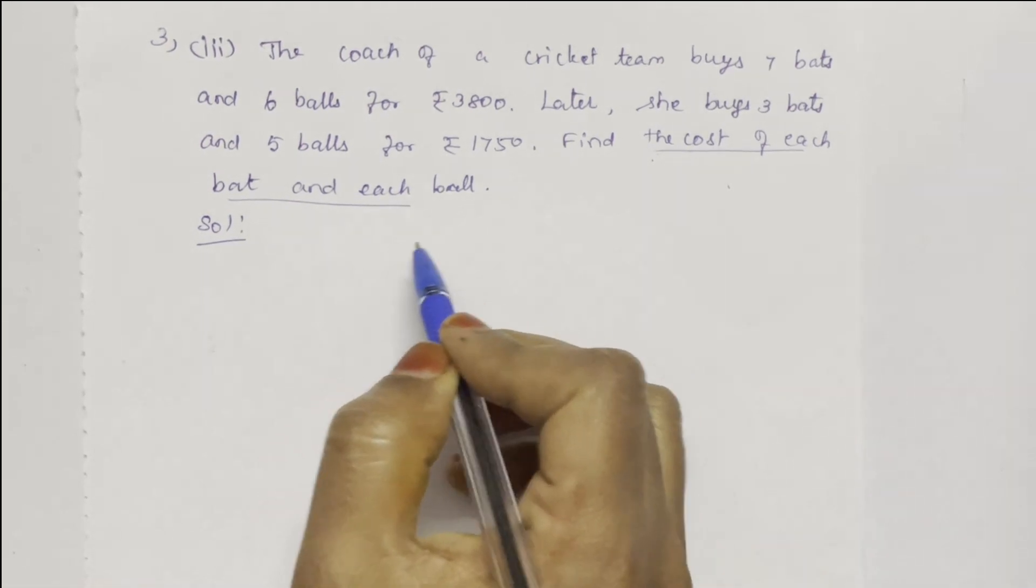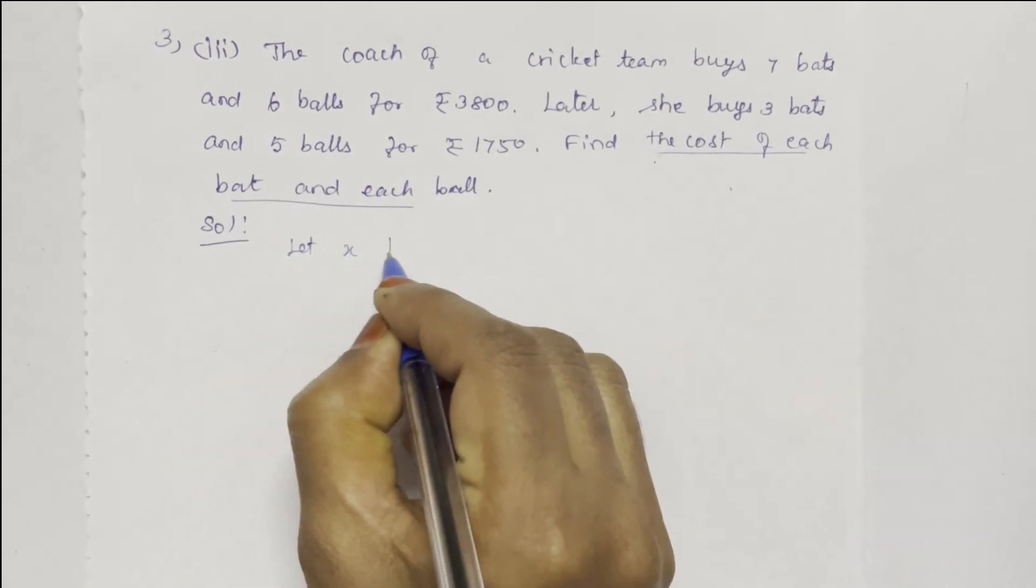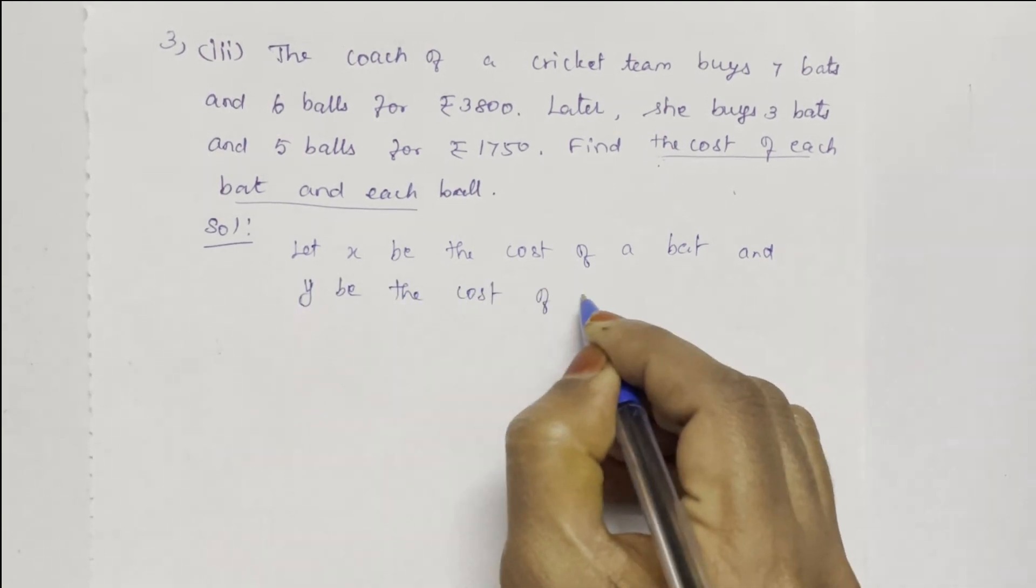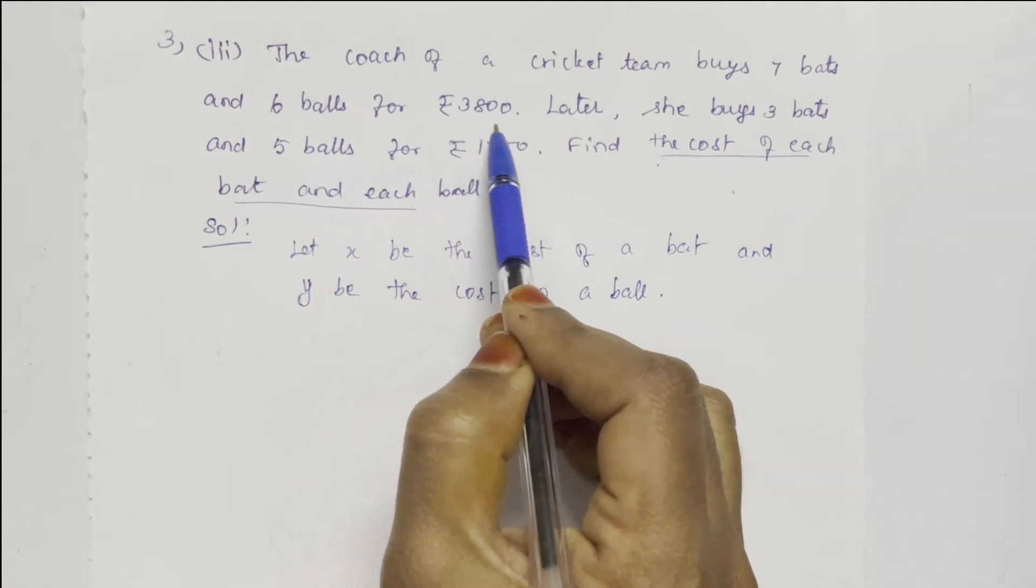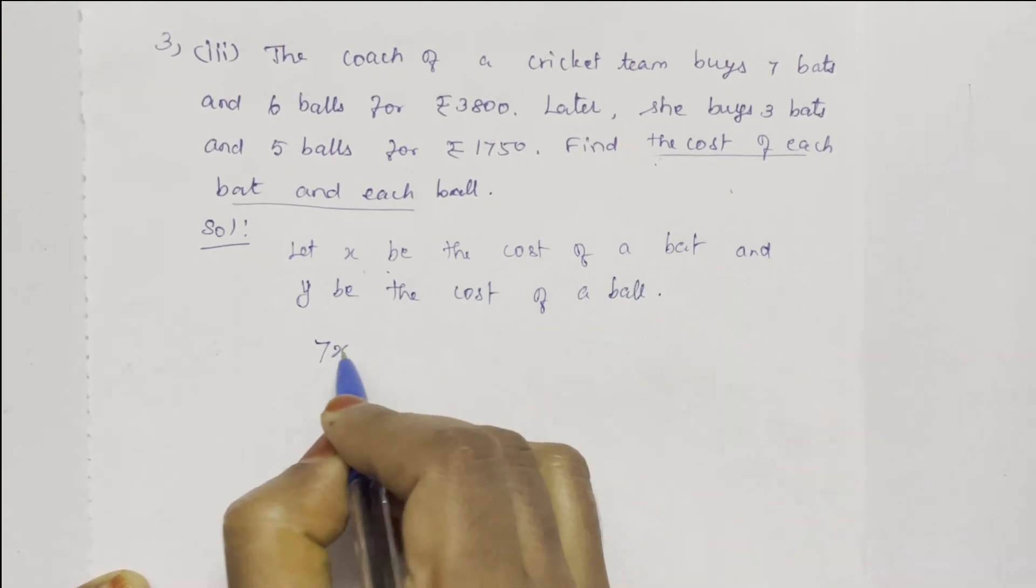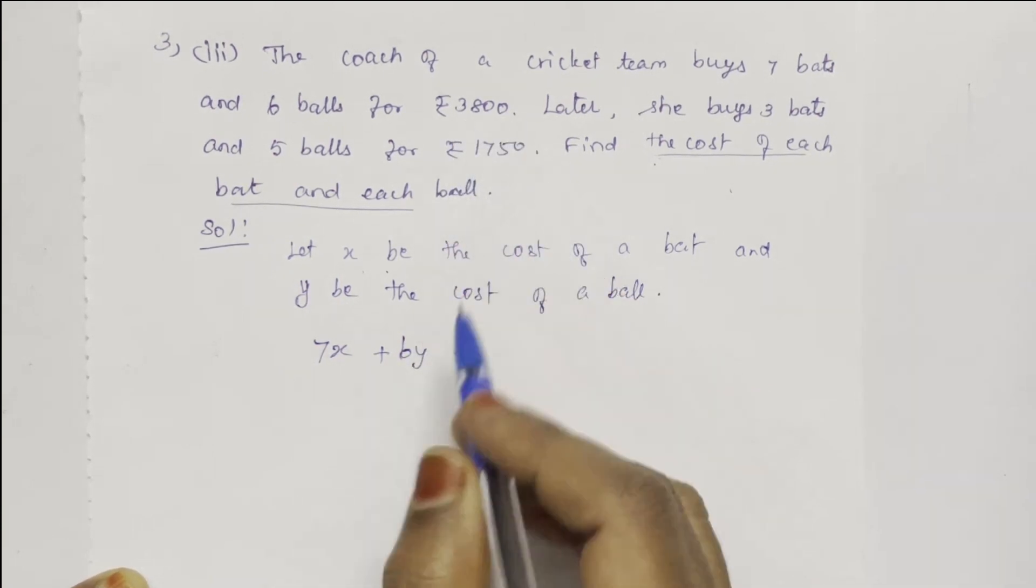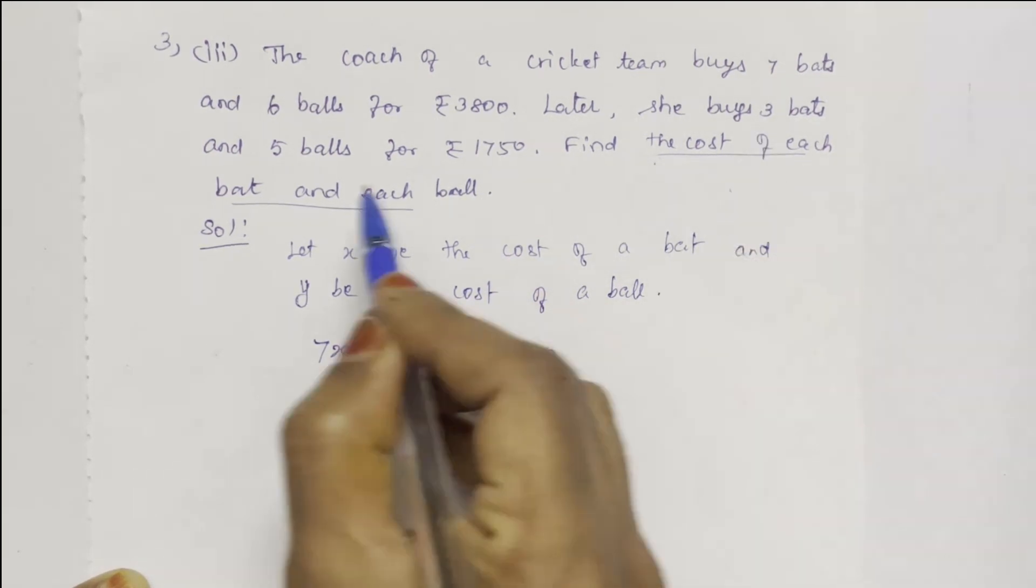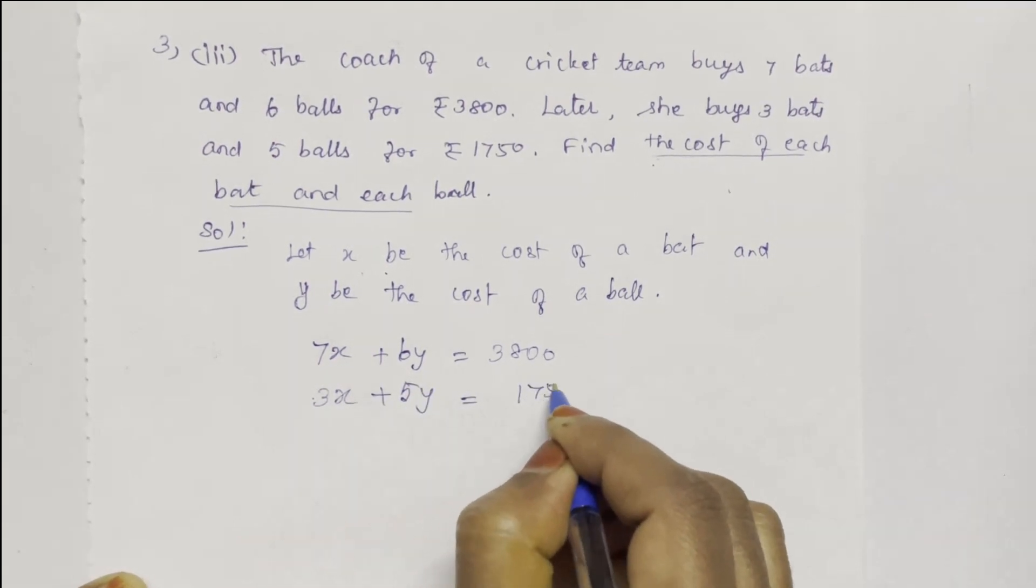Let X be the cost of a bat and Y be the cost of a ball. Now, 7 bats and 6 balls for Rs. 3800 gives us: 7X plus 6Y equals 3800. Next, 3 bats and 5 balls, so 3X plus 5Y equals 1750.